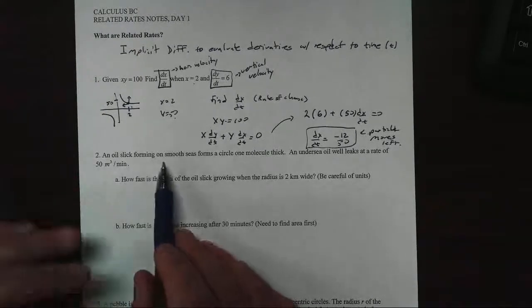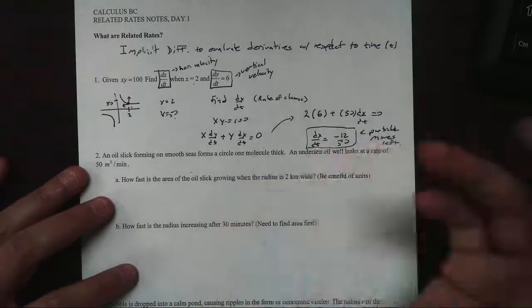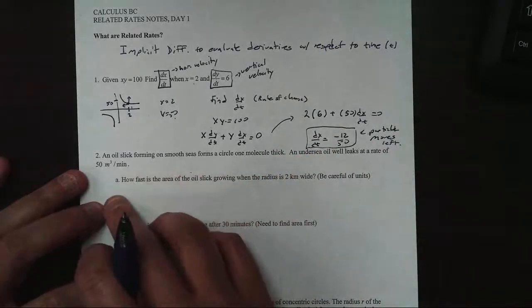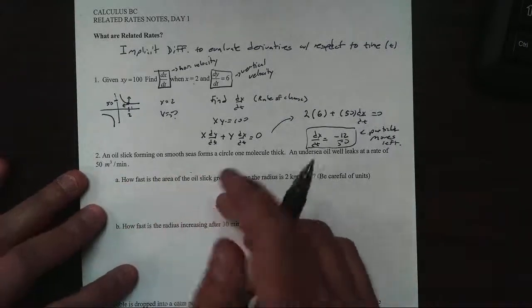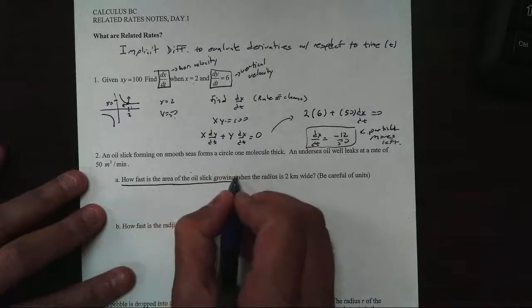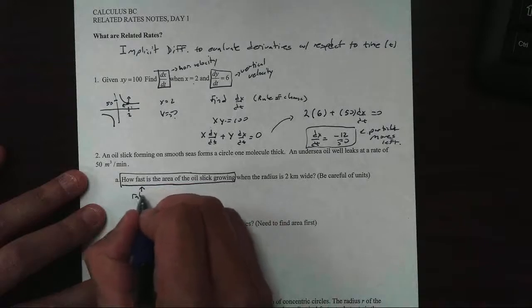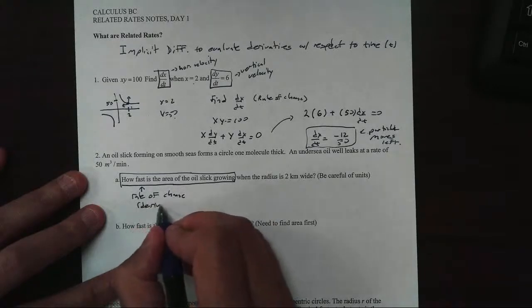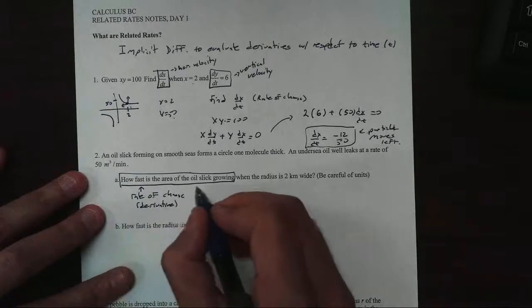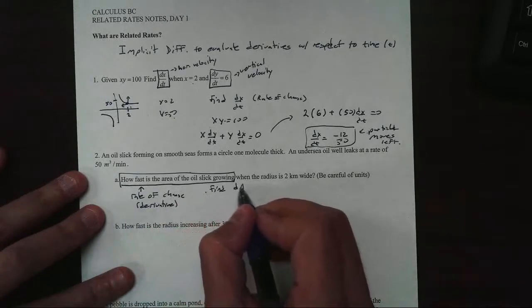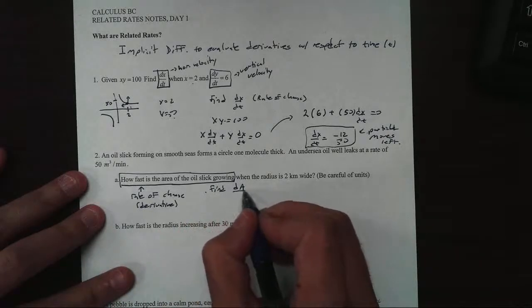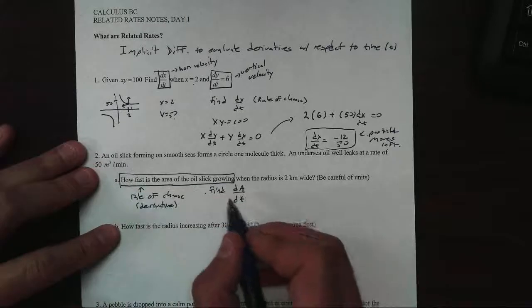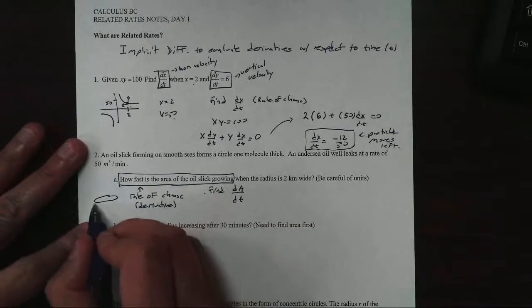Let's take a look here. We have an oil slick forming on a smooth sea, forms a circle one molecule thick, basically one unit thick. An undersea oil well leaks at a rate of 50 cubic meters per minute. The question says, how fast is the area growing? This is looking for a rate of change, which is for us a derivative.